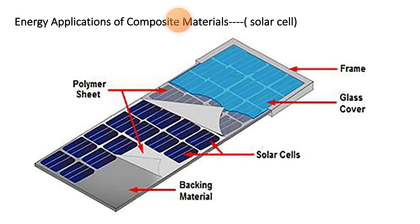In solar cells, the structure includes an RC polymer sheet made from composite, backing material, solar cells, glass cover, and frames. Multiple materials are used to produce solar cells. Composites are also used in hydroelectric energy for turbine purposes.